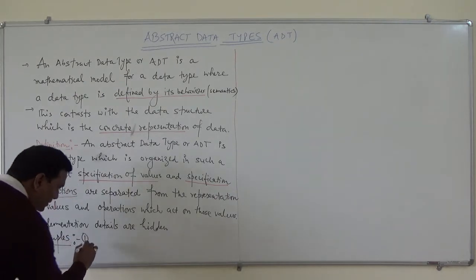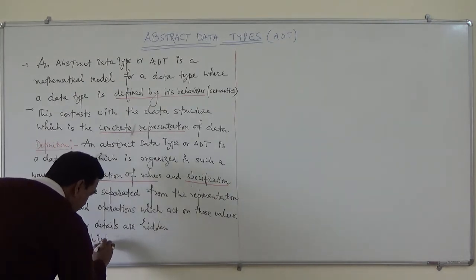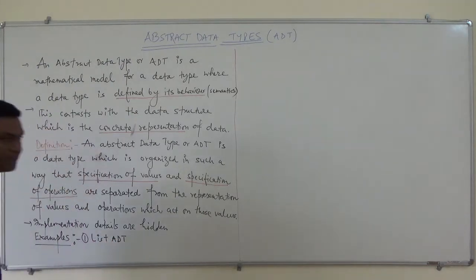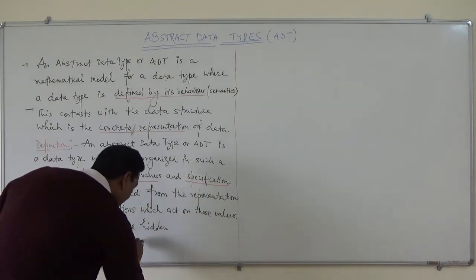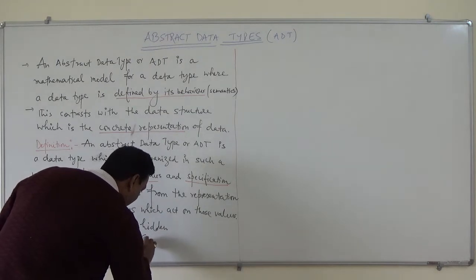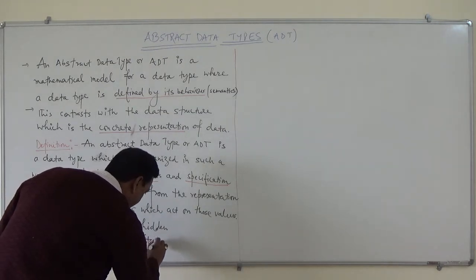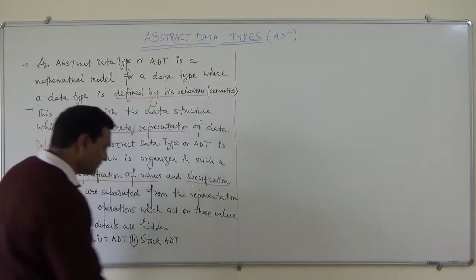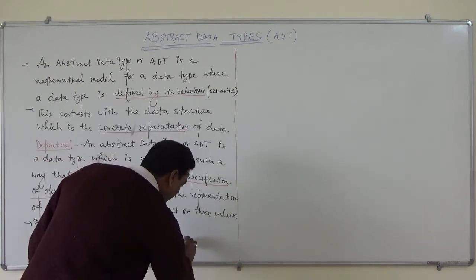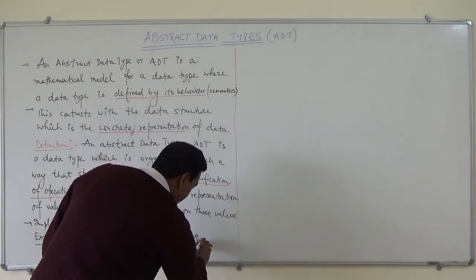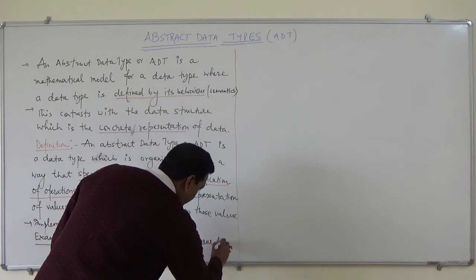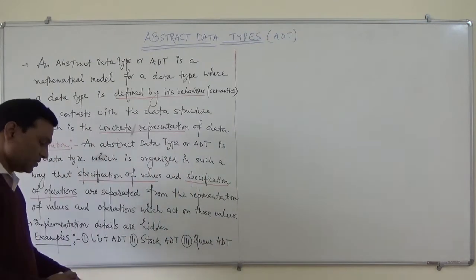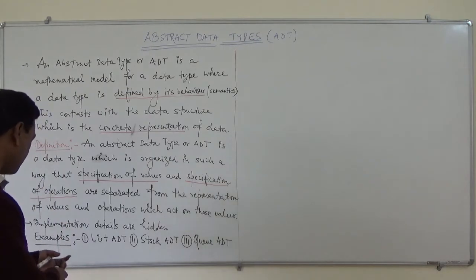For example, we can take: first is list ADT — list abstract data type; second is stack ADT — stack abstract data type; and third is queue ADT — queue abstract data type. So these are the abstract data types.